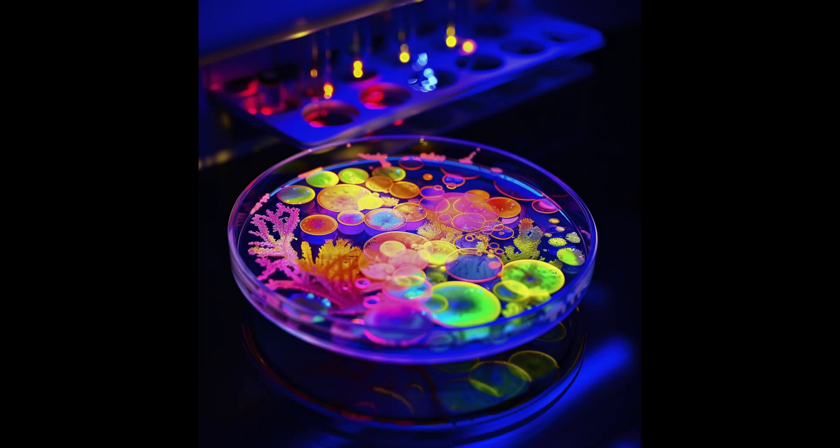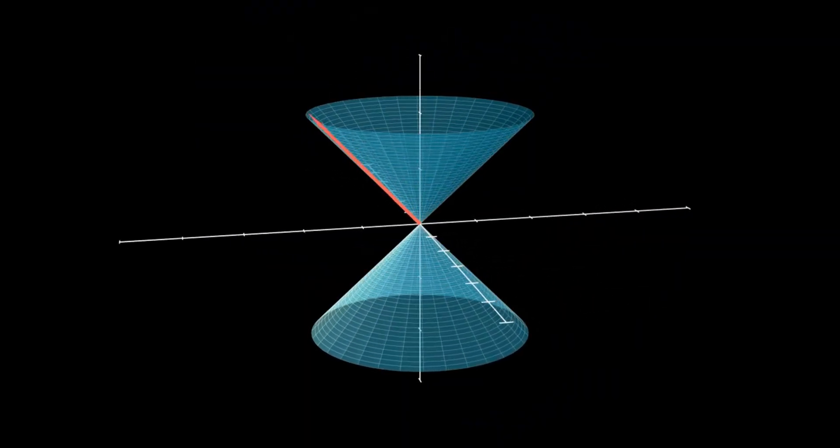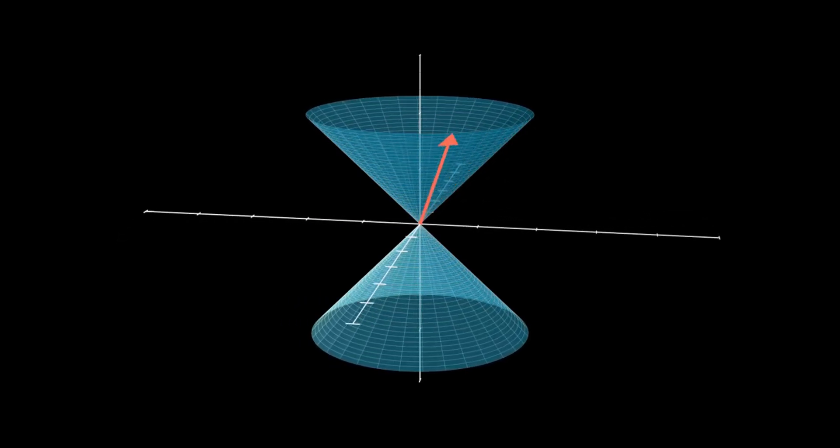Next, we need to consider the concept of spin in quantum mechanics. Electrons possess an intrinsic property called spin, which gives them a magnetic moment, causing them to behave like tiny magnets.